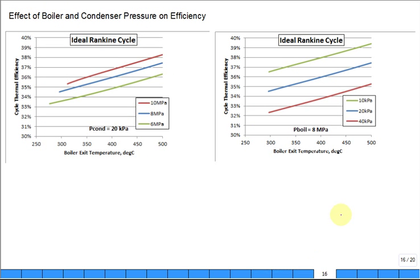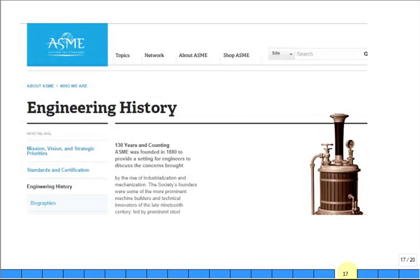So here's some plots showing you the effect of the thermal efficiency as a function of the boiler temperature. I'm going to come back to this, but you can see that if you increase the pressure from 8 to 10, here's 6 megapascal, you're increasing the pressure in the boiler. It improves the efficiency. But what I want to do is I want to talk a little bit about ASME.